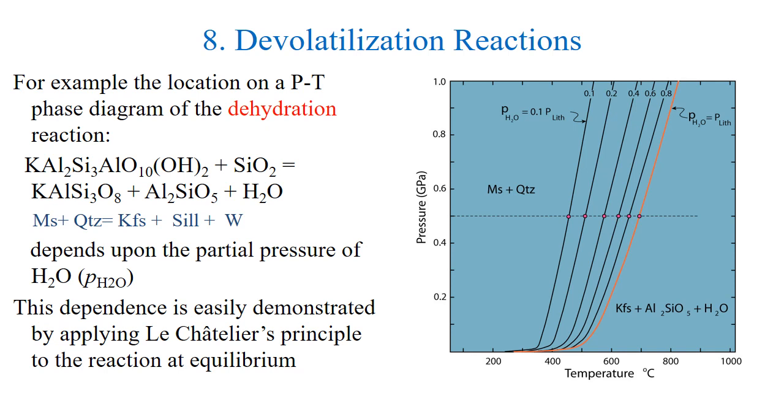The hydrous phase is almost always on the low temperature side of the curve, and the evolved fluid phase is on the high temperature side of the curve, since it's being freed from the mineral structure. When we apply this to the Clapeyron equation, which is dp/dt equals delta s over delta v,